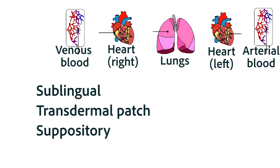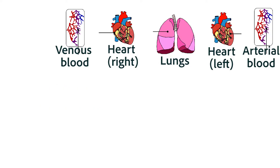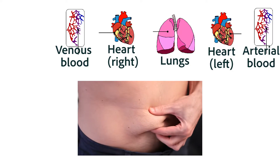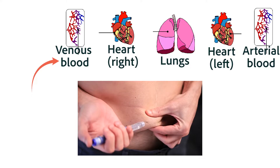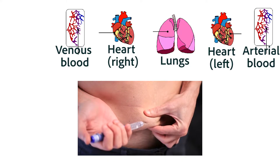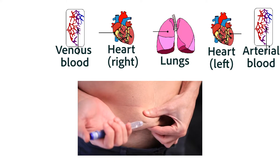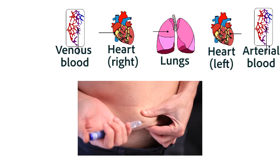From the venous system, the medication would only have to go to the right side of the heart, into the lungs, into the left side of the heart, and onto systemic arterial circulation. And if you injected a medication into the subcutaneous fat, it's going to go into the interstitial spaces around the adipose tissue, and then into the venous circulation.